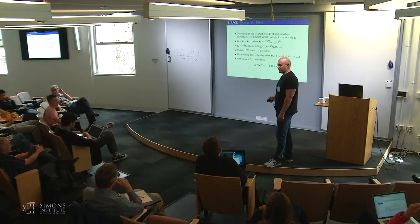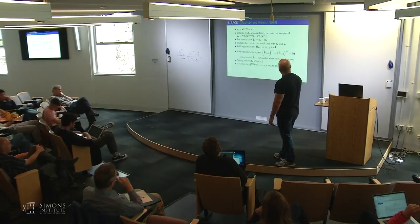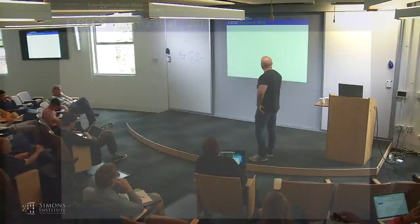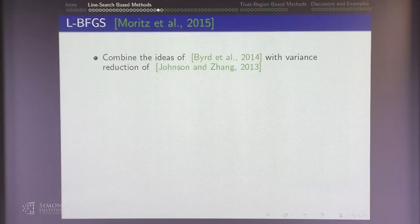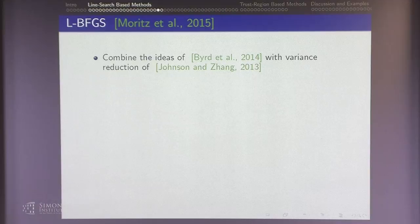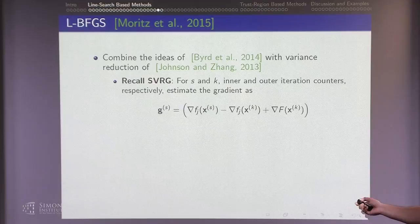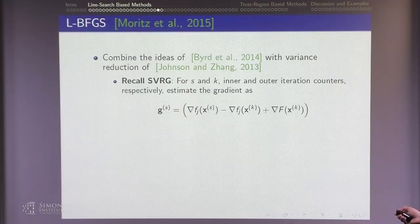A couple of years after that, combining those ideas with variance reduction — the SVRG paper, Stochastic Variance Reduced Gradient Descent — they turned it into a double-loop method. Instead of just SGD with one sample, in the inner loop you look at the difference of the gradient at one sample at the current iterate minus the gradient of that same sample at a checkpoint, plus the full gradient at the checkpoint. In expectation, this is exactly the full gradient at the checkpoint. This reduces variance: at the optimum, the estimate is exact.